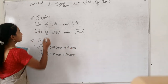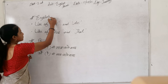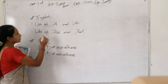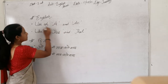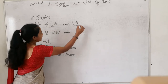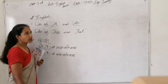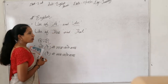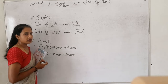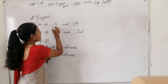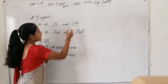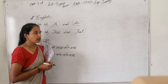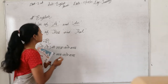Dear students, you can see the first work is adjective work in two subjects: English and Hindi. In English subject, we will look at the use of A and AN. So, what is A and AN? What are Articles?